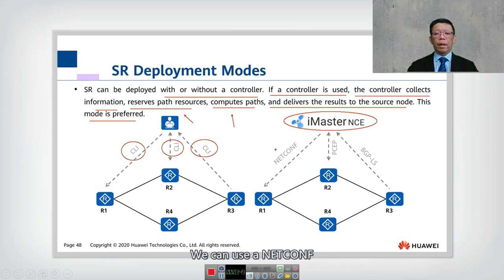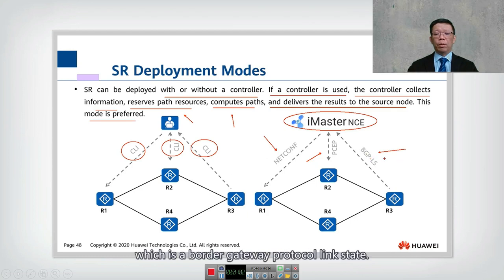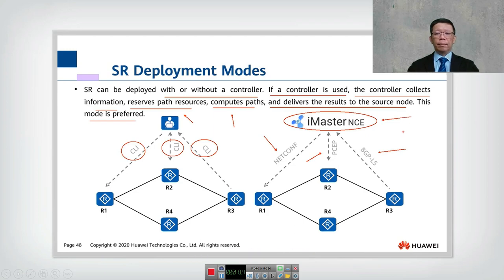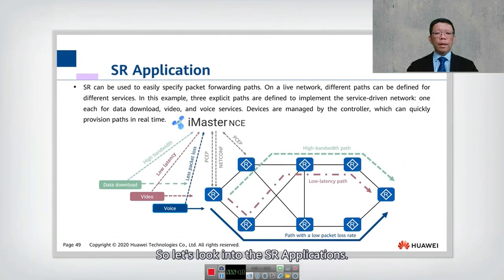There are three protocols that can be used to connect to the router using segment routing: NETCONF (network configuration), PCEP (Path Computation Element Protocol), and BGP-LS (Border Gateway Protocol Link State), which extends BGP. For maximum benefit, it is recommended to use iMaster NCE when deploying segment routing.